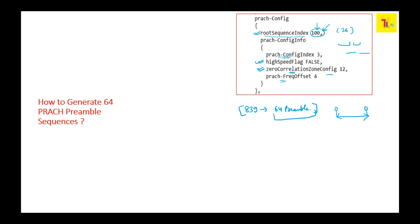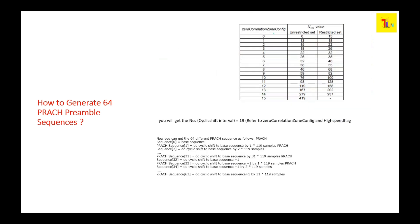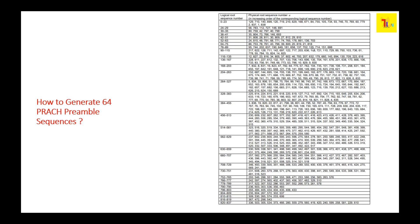The high speed flag gives an indication of whether the UE is moving slow or fast, so that the system can identify the appropriate cyclic shift. When the UE is moving slow, we need to choose a different zero correlation zone config set — that cyclic shift NCS. If we are going with a slow moving object, we need to go with the unrestricted set; if fast moving, we go with a different set. We'll go through the calculation shortly.